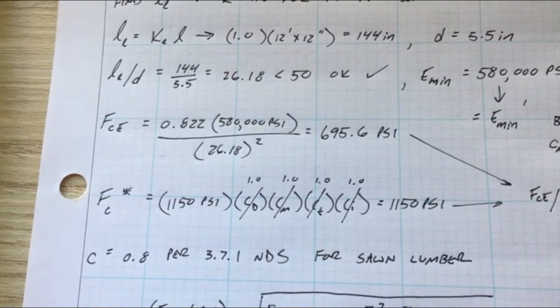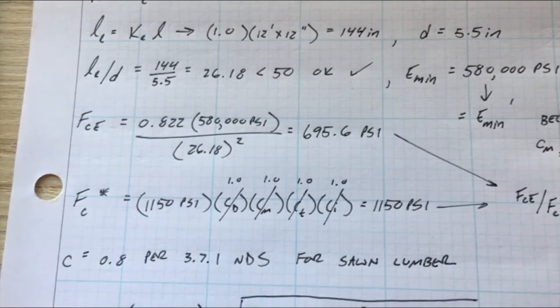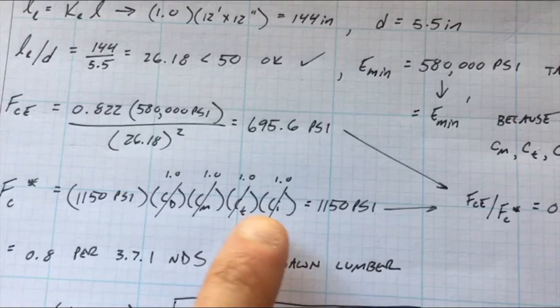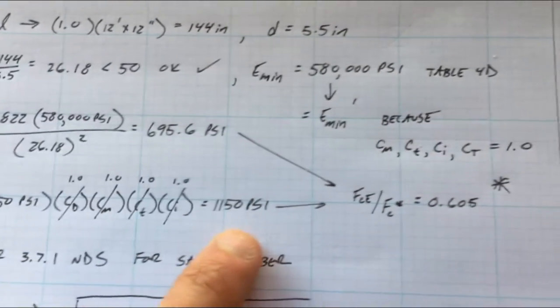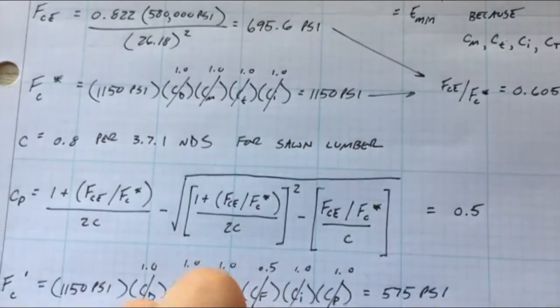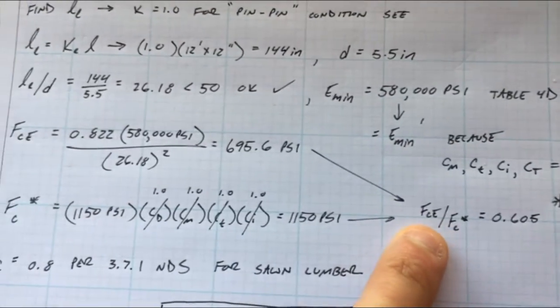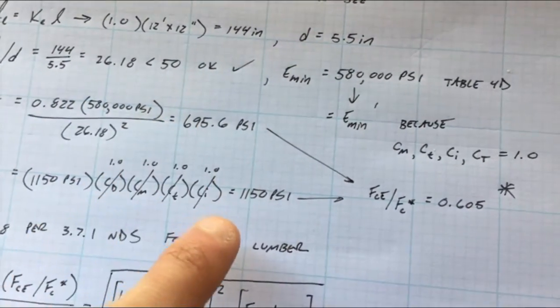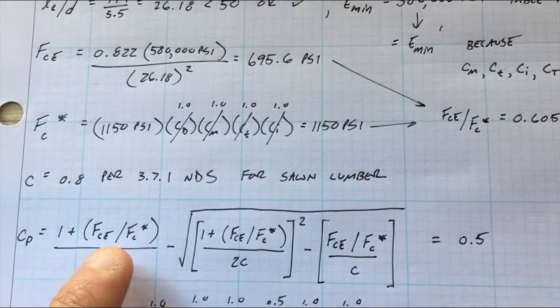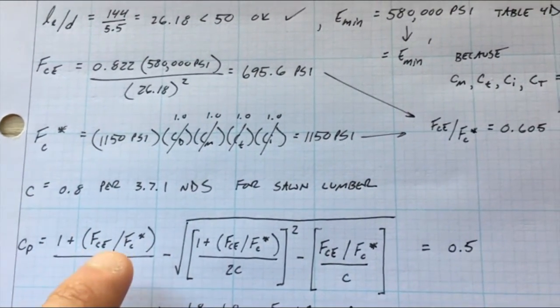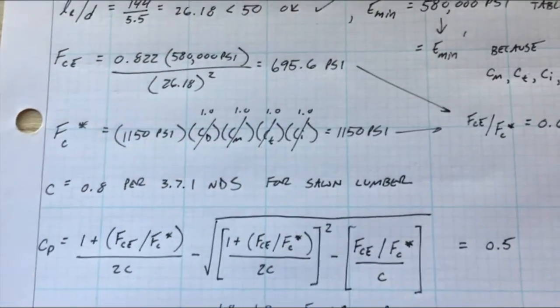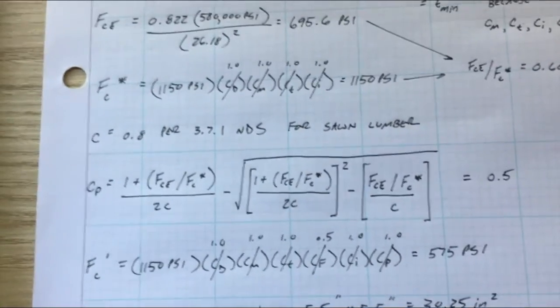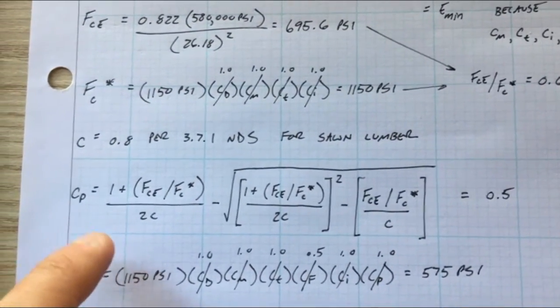Now we have everything for FCE. Plug it all in, gets you 695 PSI. Now we need Fc star. Fc star is just Fc times all of your coefficients except for CP which is what we're solving for. So everything else just was 1.0 so that's just 1150 PSI. A little trick to do here before we go to our big final equation is do take FCE over Fc star, that's 0.605. When you take these two, because that equation, that little equation is scattered throughout this big equation, so it's good to just have that factor instead of doing it over and over and over again.